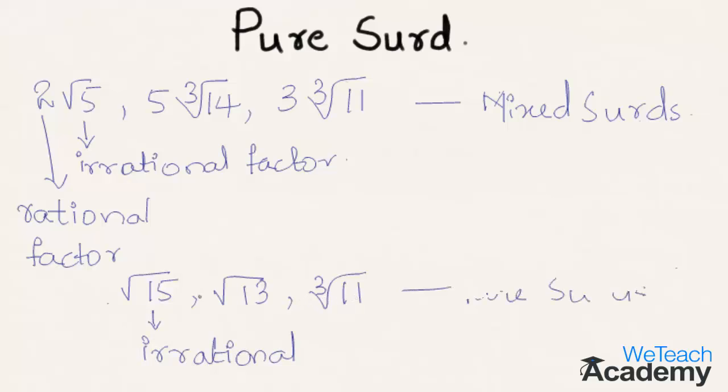So this kind of surds are called pure surds. Here we can say that a surd having unity as its rational factor and the other factor being irrational is called a pure surd.